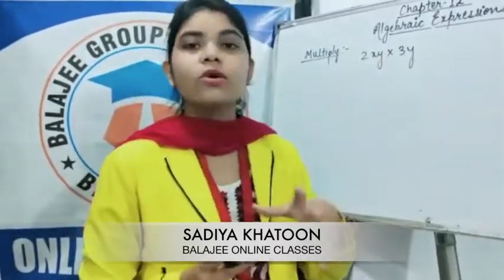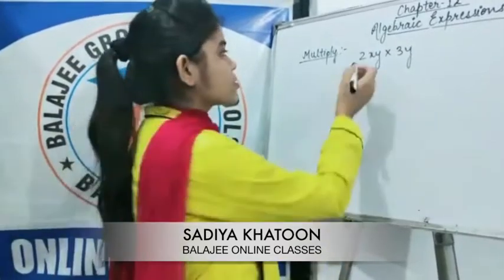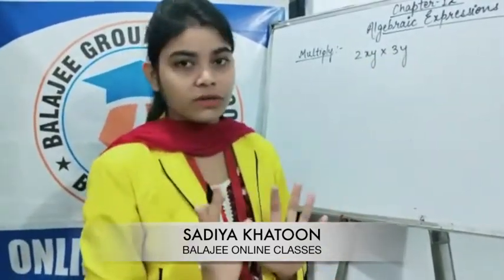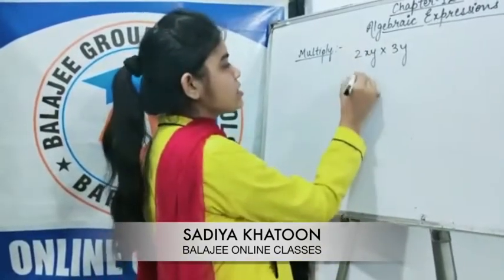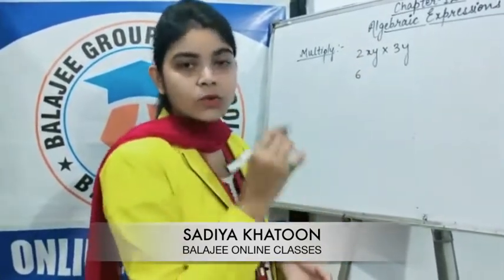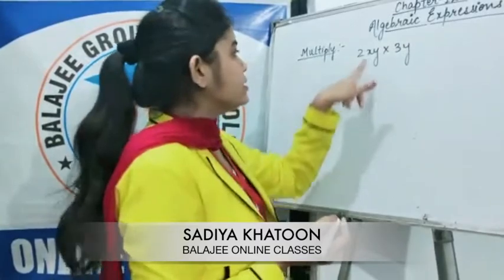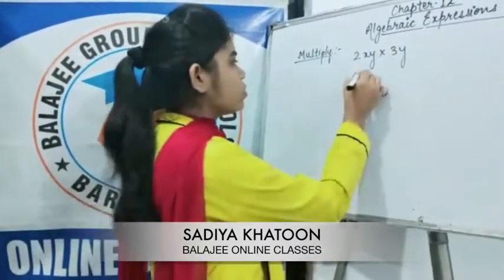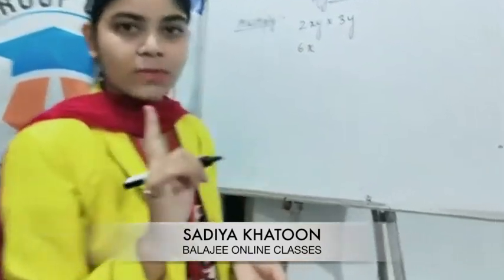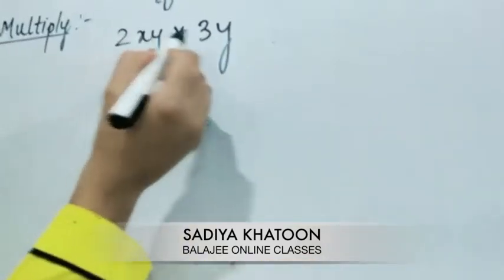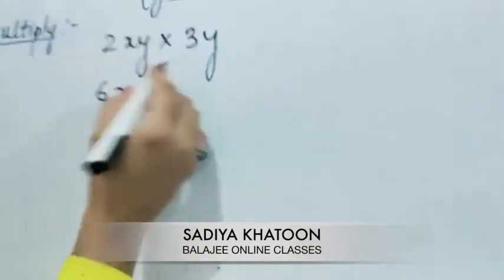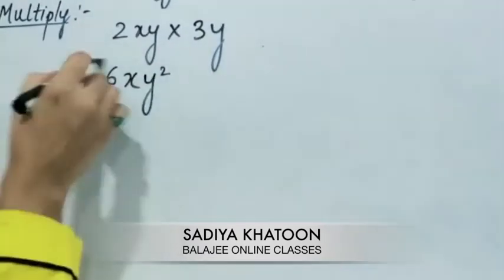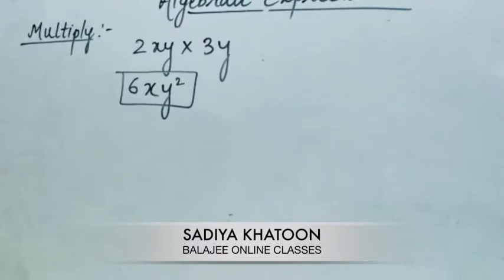Multiply the coefficients: 2 times 3 equals 6. Now move to the variable part. There is x here but no x in the second term, so x remains as x to the power 1. Then y times y gives y squared. So the answer is 6xy squared.